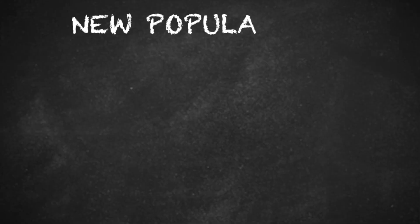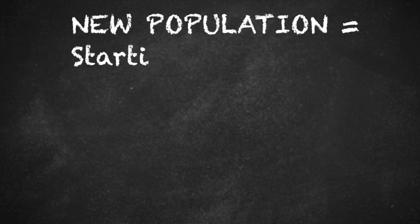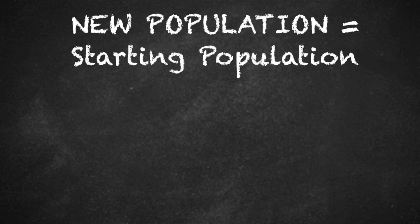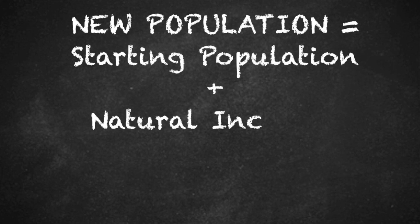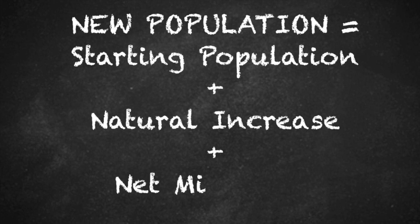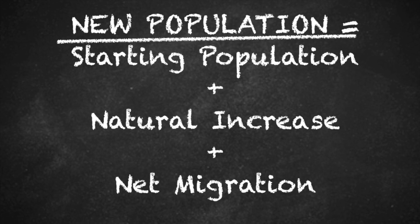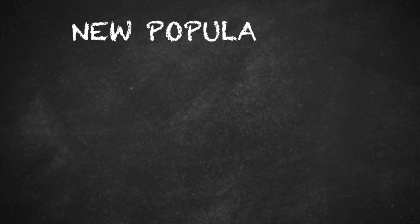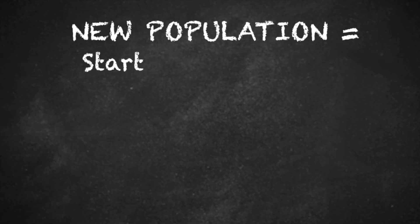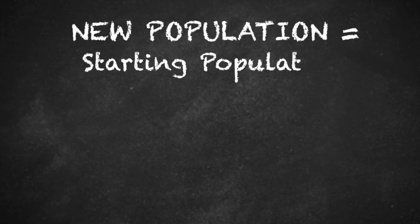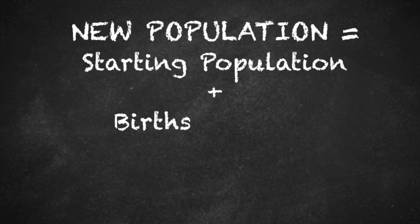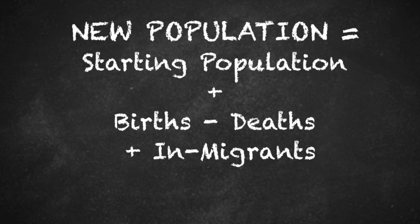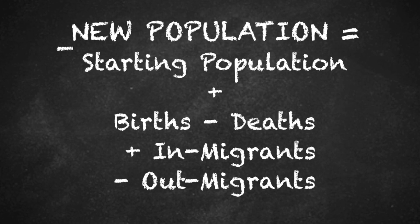New population equals the starting population plus natural increase plus net migration. Or, the new population is equal to the starting population plus births minus deaths plus in-migrants minus out-migrants.